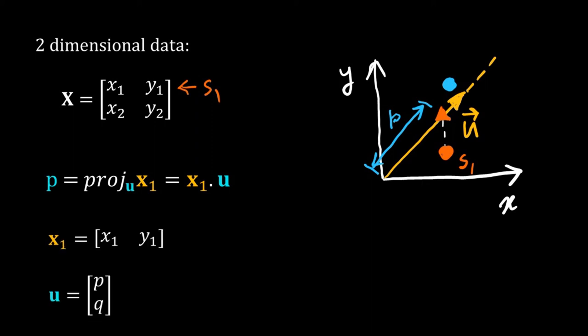Suppose u is a 2 by 1 vector with elements p and q. Our data has two variables. It is a two-dimensional data. So the vector u that we use for projection is also a 2 by 1. By dot product I get a scalar value: p into X1 plus q into Y1. That is the position of sample 1 on span of u.